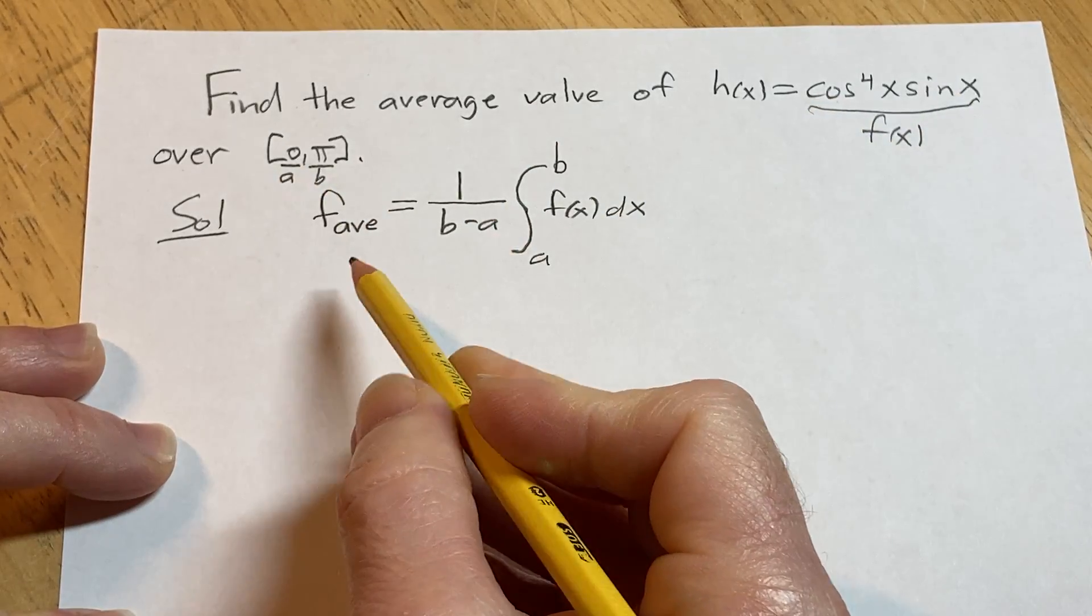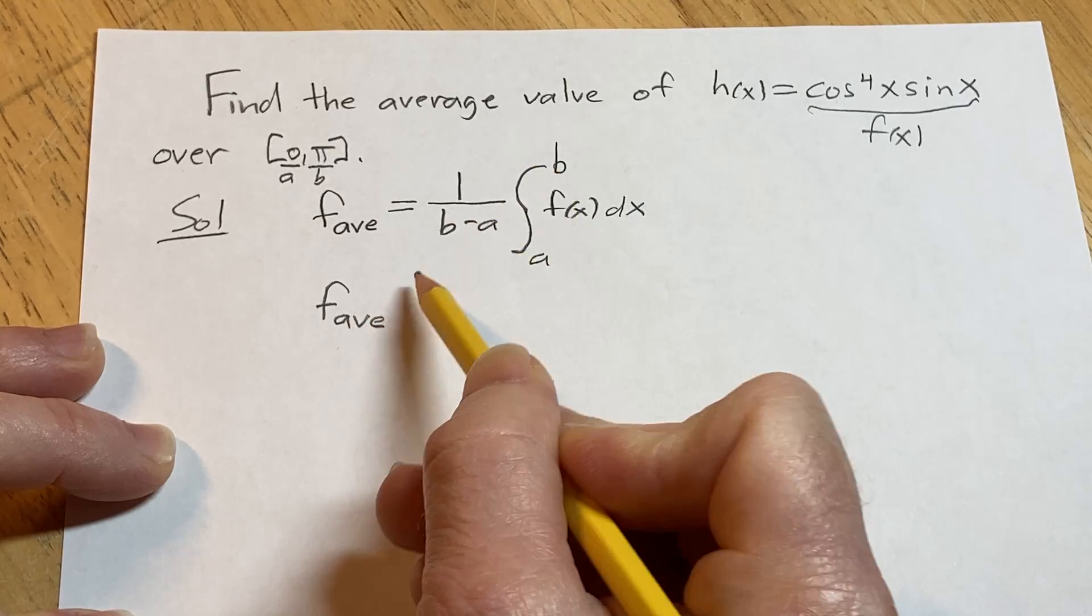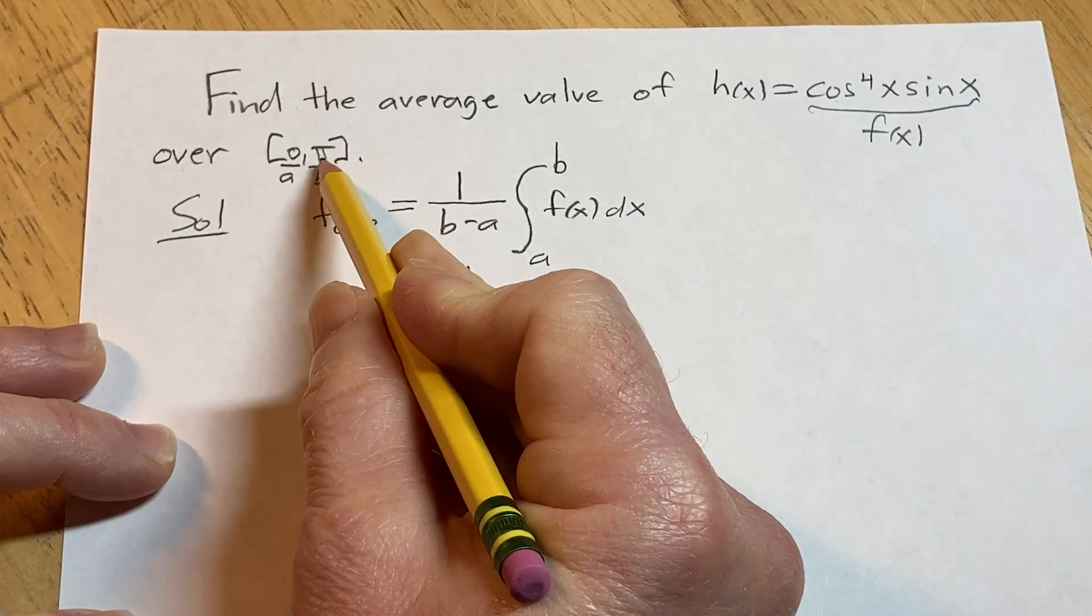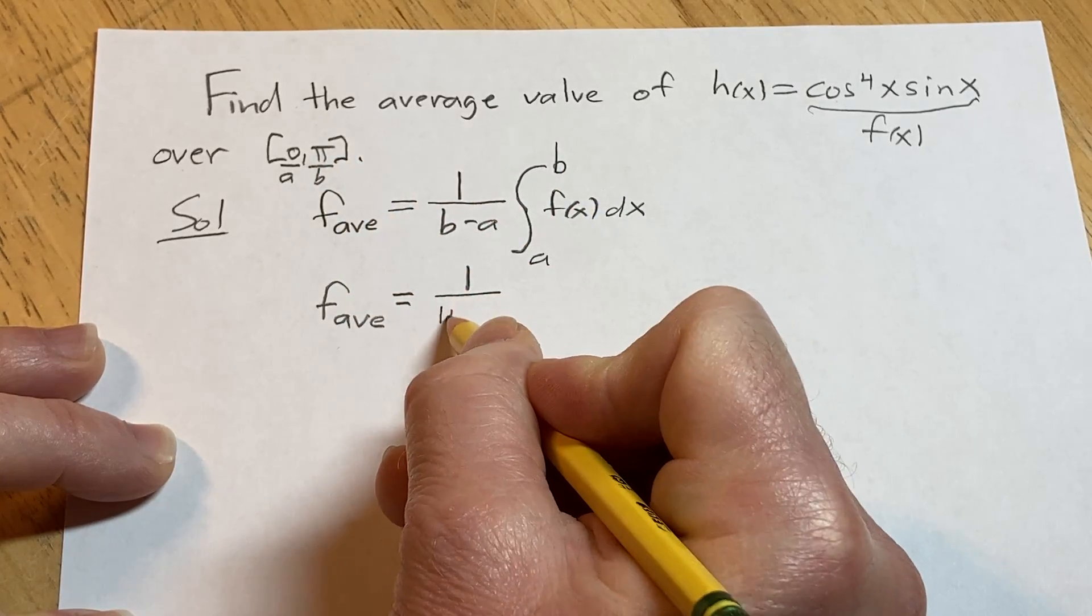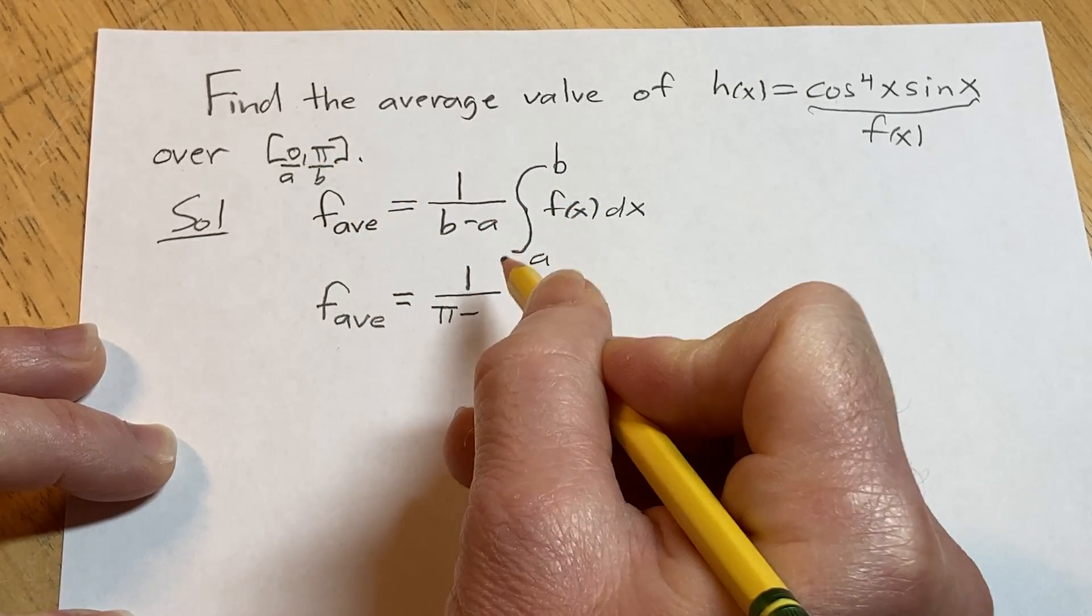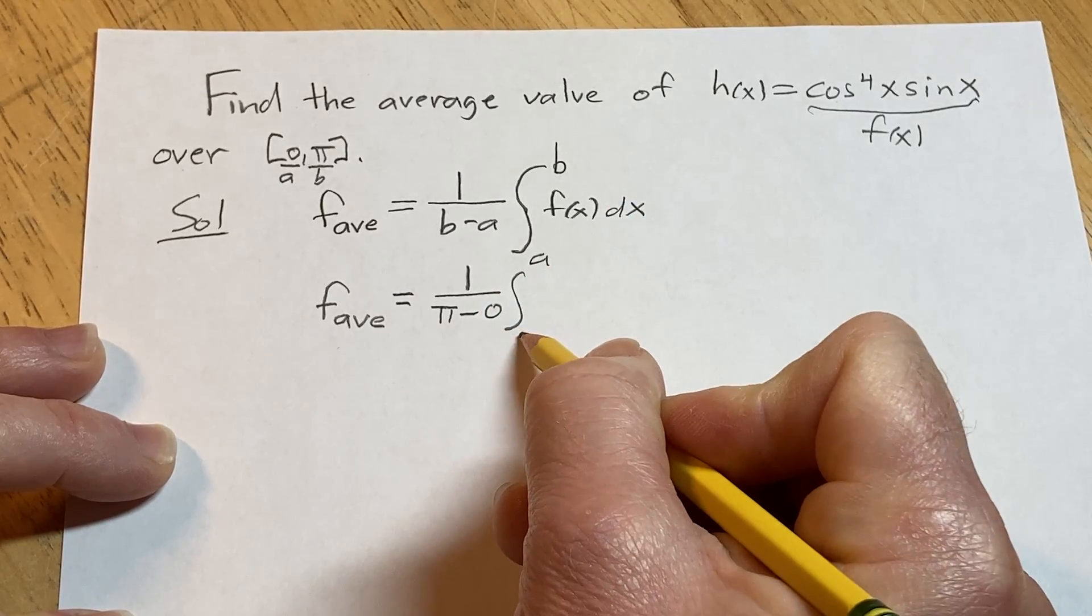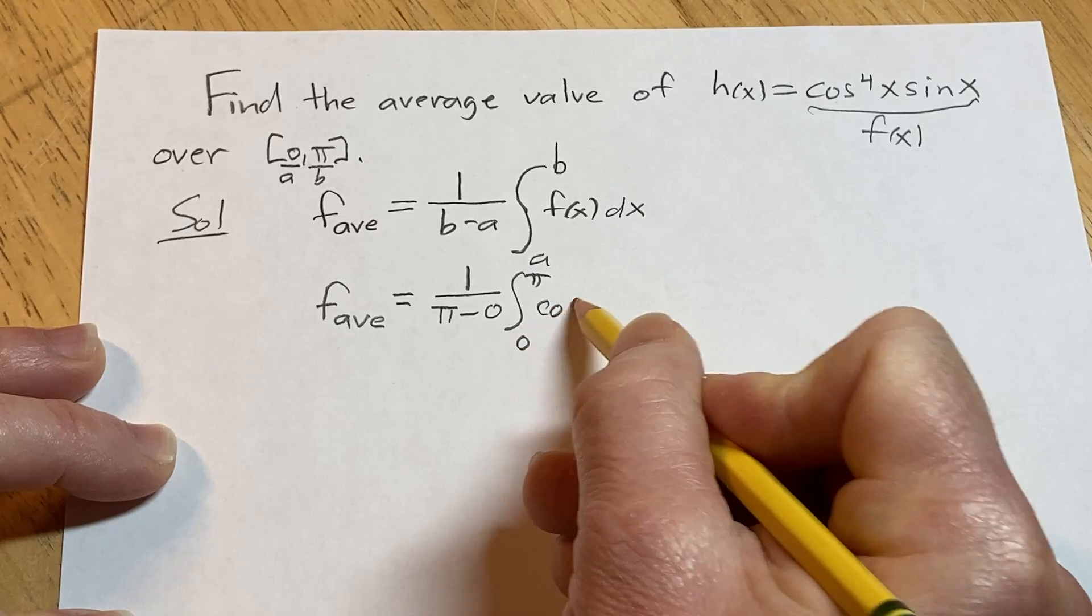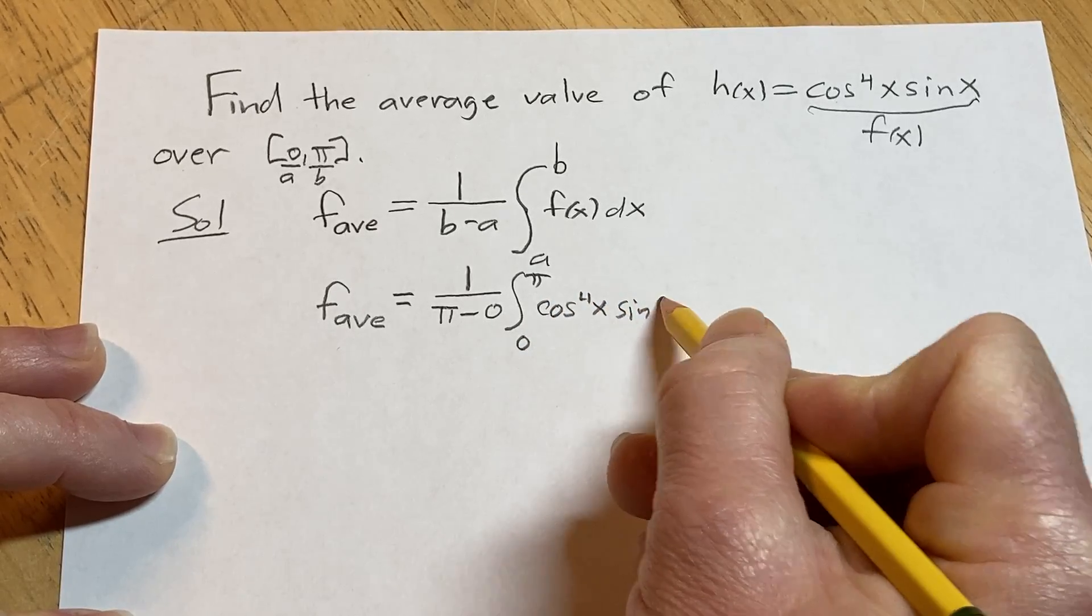Let's go ahead and write down the formula again. So f sub ave, the average value of a function is equal to 1 over, so here we have b which is pi, this is pi minus, and then we have 0. We're going from 0 to pi and then we have the cosine of x to the fourth power times the sine of x dx.